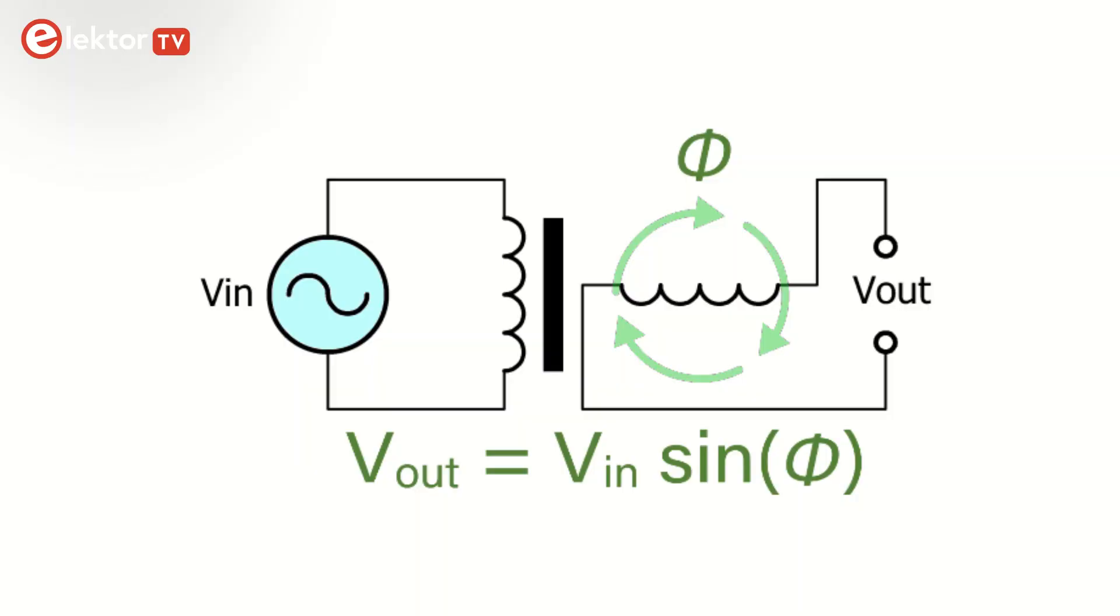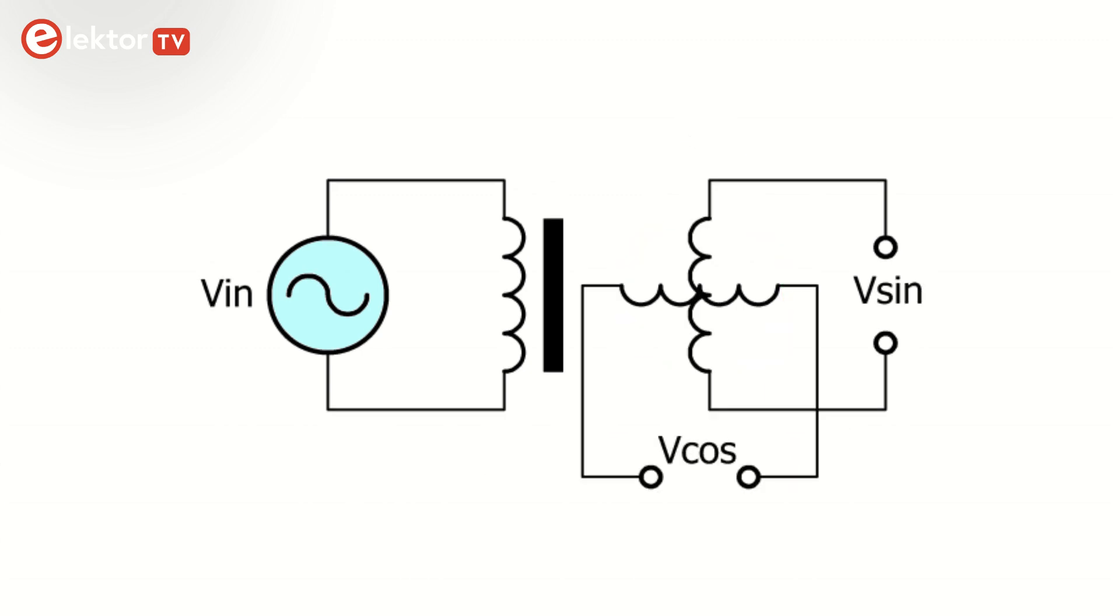Another inconvenience of a two-coil device is that it cannot indicate the spinning direction. Rotating left or right produces identical signals. The two-coil device can be greatly improved by adding a second winding to the output. If the winding is rotated 90 degrees with respect to the first, then its output voltage will be 90 degrees out of phase with the first voltage.